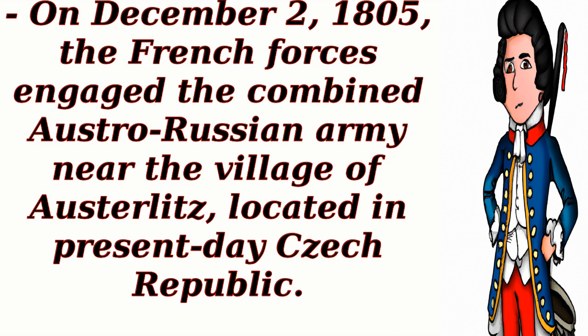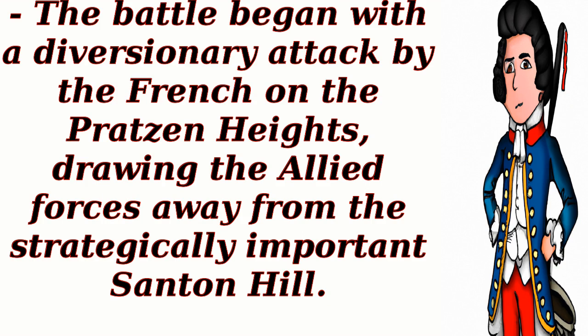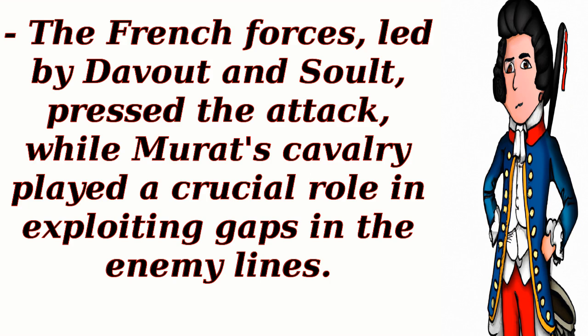7. Major events during the Battle of Austerlitz. The battle began with a diversionary attack by the French on the Pratzen Heights, drawing the allied forces away from the strategically important Santon Hill. Napoleon then launched a surprise attack on the weakened center of the allied line, splitting it into two and isolating the Russian forces. The French forces, led by Davout and Soult, pressed the attack, while Murat's cavalry played a crucial role in exploiting gaps in the enemy lines.